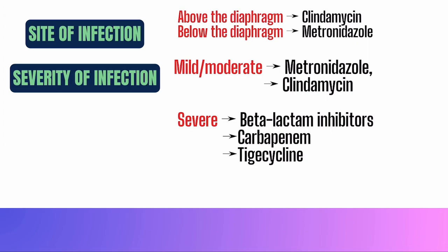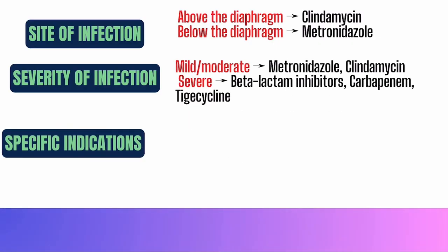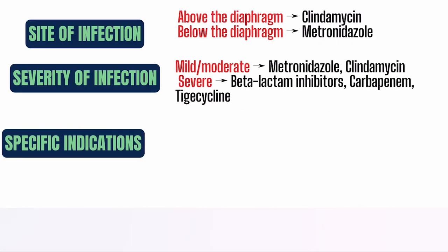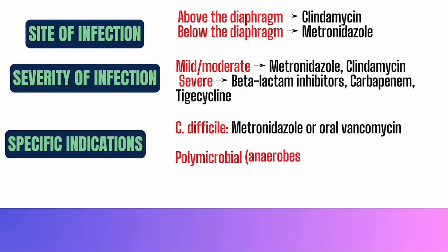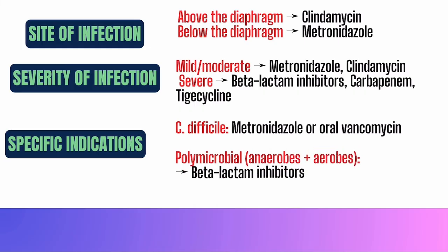And step three: look for specific indications. For C. difficile, stick with metronidazole or oral vancomycin. For polymicrobial infections involving anaerobes and aerobes, beta-lactam inhibitors or carbapenems are your safest bet.